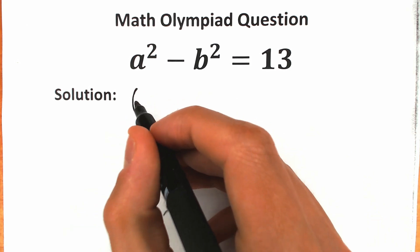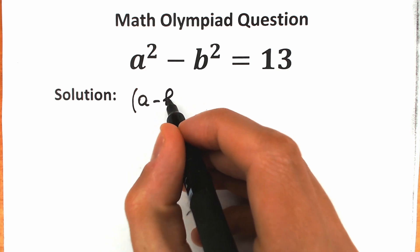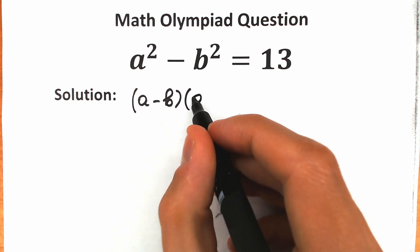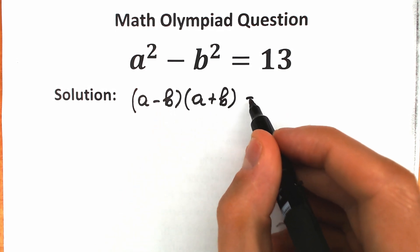Everyone knows about it. So this is our formula: a minus b times a plus b equals 13.